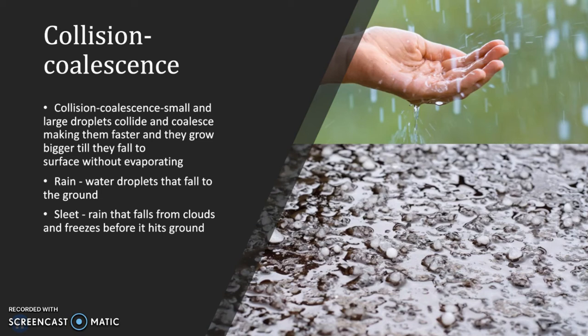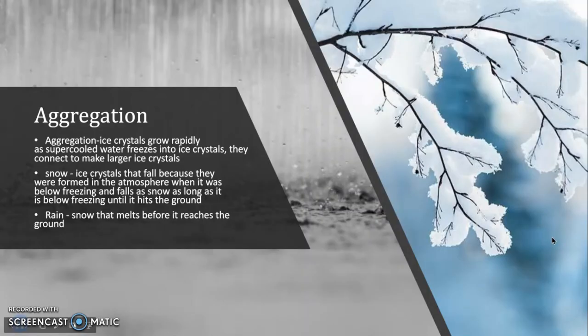Rain formed through collision and coalescence consists of water droplets that fall to the ground. Sleet is when the rain falls from the clouds and freezes before it hits the ground. Aggregation is the second process by which precipitation can be formed — this is when ice crystals grow rapidly as supercooled water freezes and they connect to make larger ice crystals.